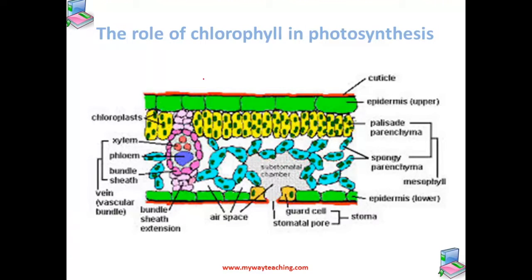Let us now understand the role of chlorophyll in photosynthesis. We have been telling you that if there is no chlorophyll, there is no photosynthesis. So chlorophyll is the most important part of photosynthesis.